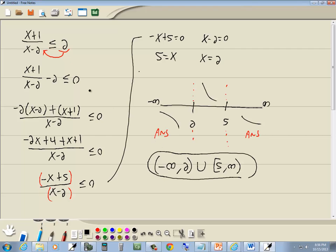Why do we put a parentheses on 2? Well, 2 came from our denominator. Any critical value that comes from your denominator always has a parentheses on it. And that would be your answer.